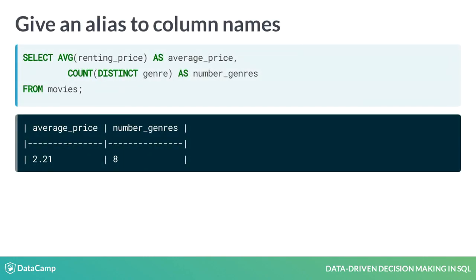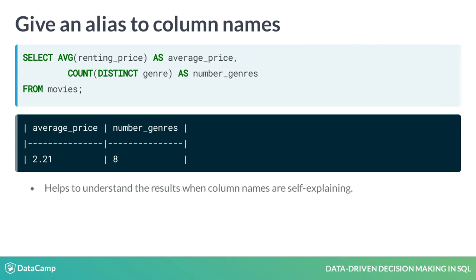In the SELECT clause, the term AS can be added to define names of a column in the return table. These new column names are also called aliases or shortcut names. Using alias names makes the resulting table more self-explanatory. In this result table, we have the average price and the number of genres.